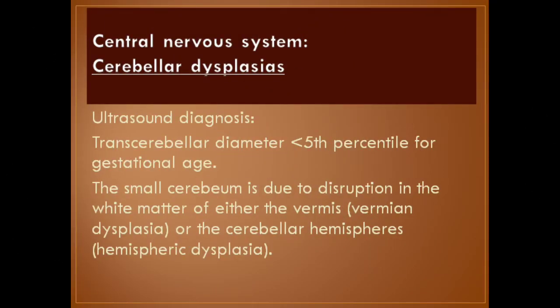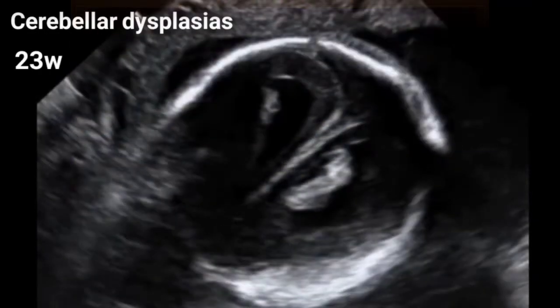Cerebellar dysplasia — ultrasound diagnosis: the transcerebellar diameter is less than the fifth percentile for gestational age. The small cerebellum is due to disruption in the white matter of either the vermis or the cerebellar hemispheres.